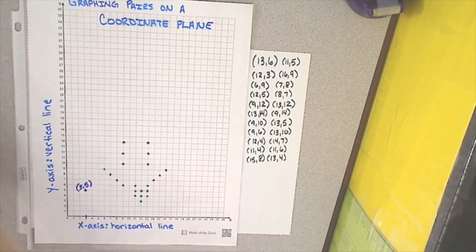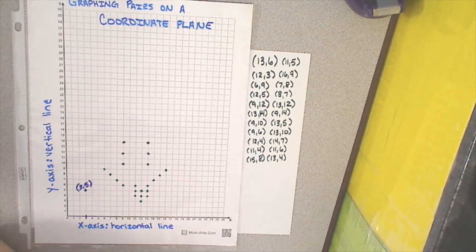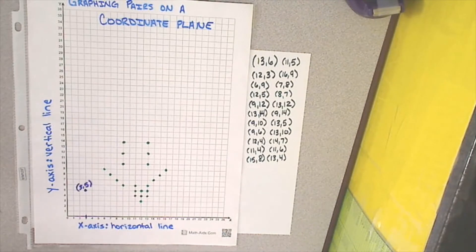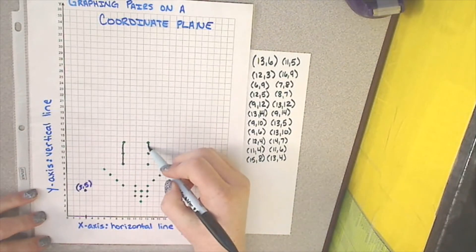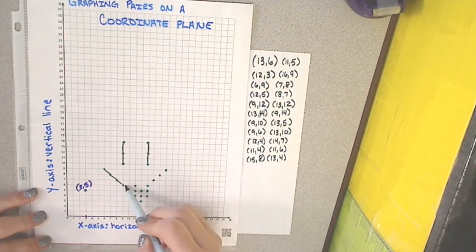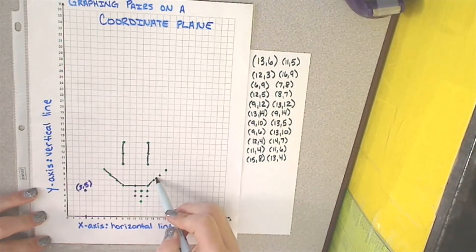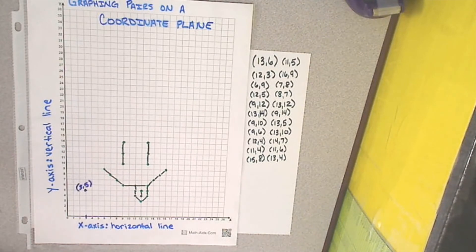And now we have this cute little picture that we have drawn using our coordinate plane graphing. You can probably already tell what it is, but I'm going to go ahead and use a different color marker to connect the dots for you. And this is the fun thing about coordinate graphing, is that you can create pictures with it. So if you notice, these three graph pairs and these three graph pairs create eyes. We then have these that, when connected, create a mouth. These, when connected, create a tongue. So we have a cute little smiley face sticking its tongue out at us.